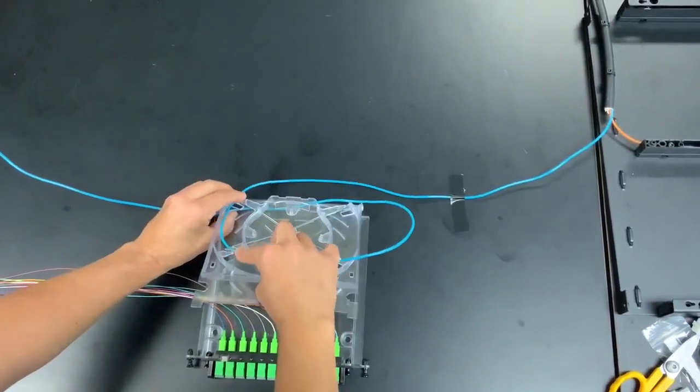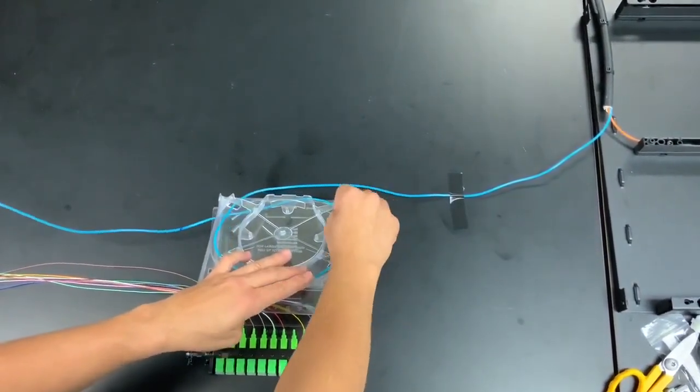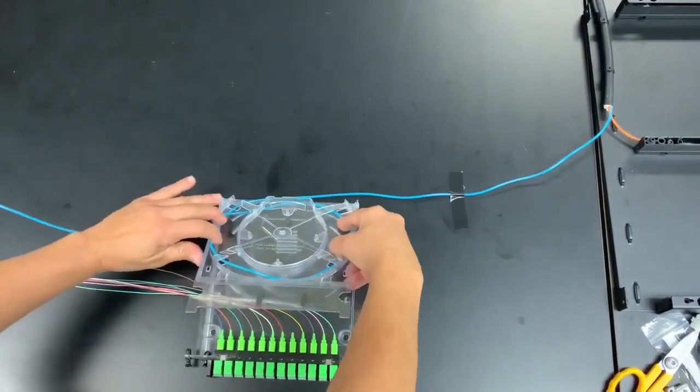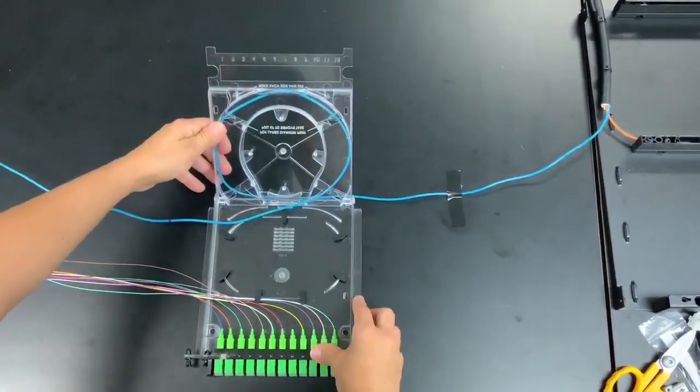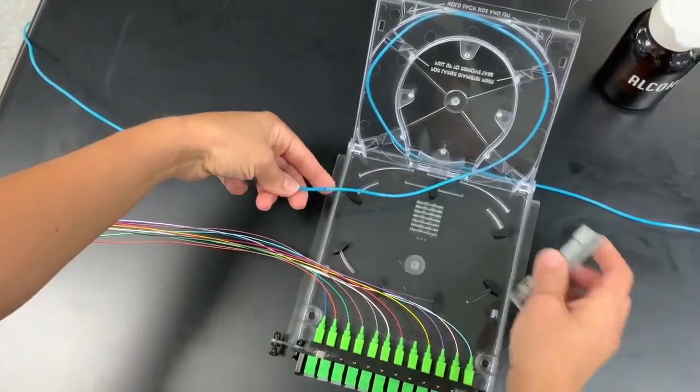Coil the buffer tube around the outer perimeter of the top track starting on the top left side, moving counterclockwise creating one loop. At the marked location, score and remove the buffer tube.